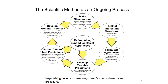The first thing we need to talk about is the scientific method. A couple of key points made in the text: science is an ongoing process. It's not just a set of procedures you complete to achieve a goal. Instead, science is a constantly ongoing process, illustrated here in this wheel modeling the scientific method.